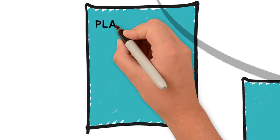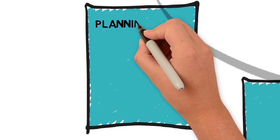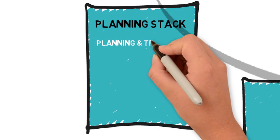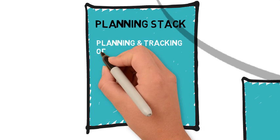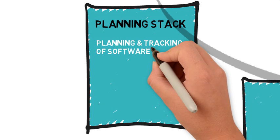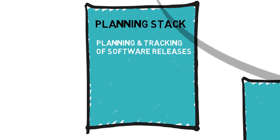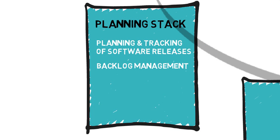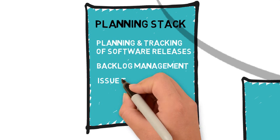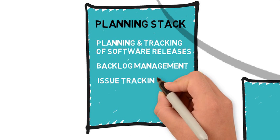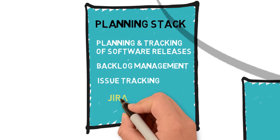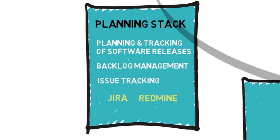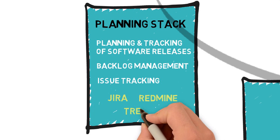Let's start with the planning stack. This software stack supports agile development throughout the delivery pipeline — planning and tracking software releases, creation of user stories, sprint planning, backlog management, and issue tracking. Typical tools used in planning are Jira, Redmine, Trello, GitHub Pages, and Microsoft TFS.